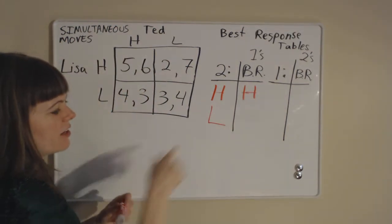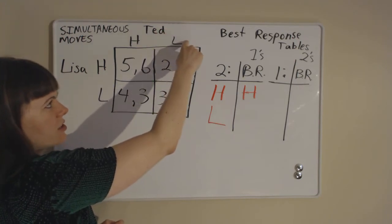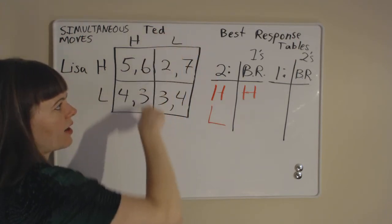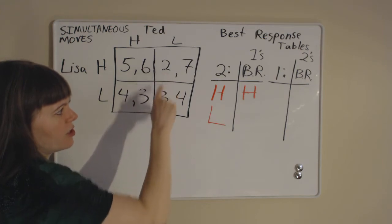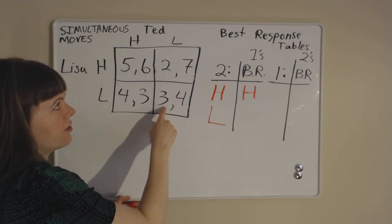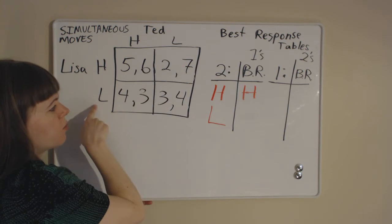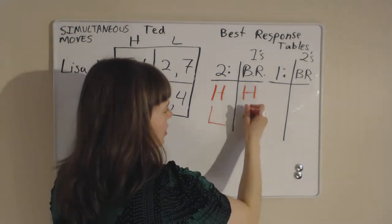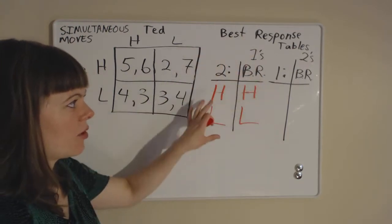Now if Ted goes low, we need to do the same analysis. If Ted chooses low, we're going to be in one of these two boxes. Lisa will be choosing between the two and the three, and she likes the three better. So if Ted goes low, she would wish she had gone low — her best response is low. And that's Lisa's table.